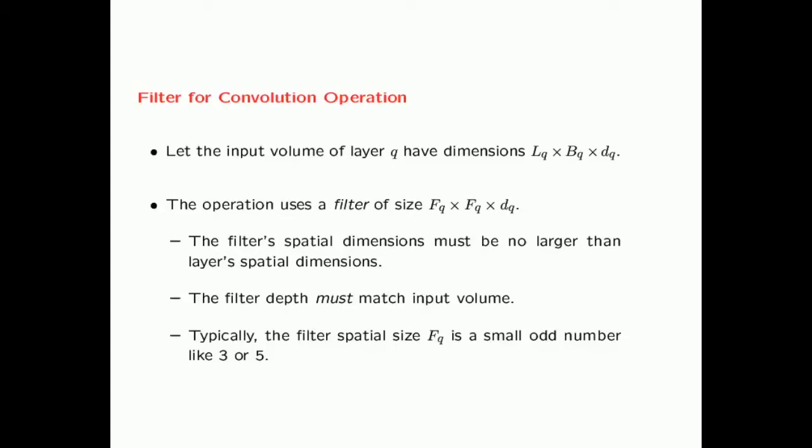A particular input volume has dimensions LQ (length) cross BQ (breadth) — typically LQ and BQ are the same — and DQ (depth). For the input layer, DQ is typically 3 for RGB color, or 1 for grayscale. For hidden layers, DQ can be arbitrary. In any given layer, you use a filter of size FQ cross FQ cross DQ. Note that FQ is typically much smaller than both LQ and BQ — it's a small square filter corresponding to a small region of the visual field.